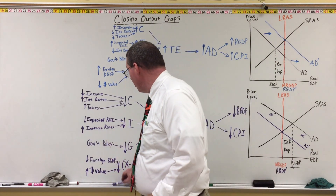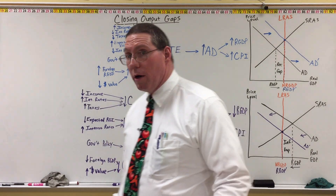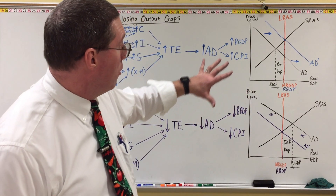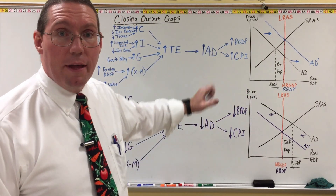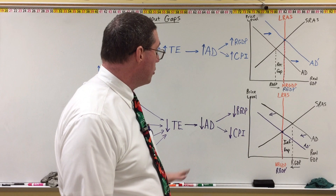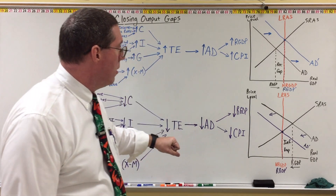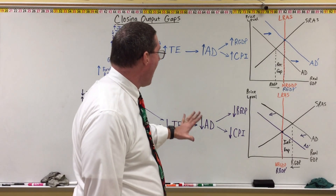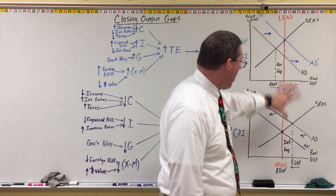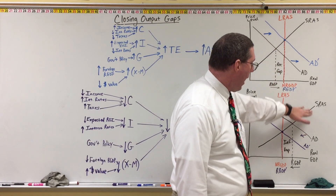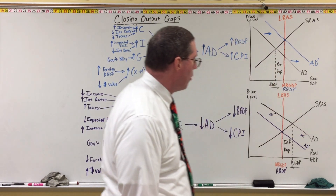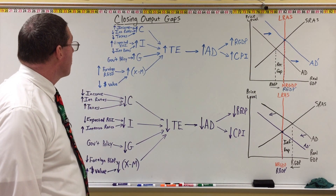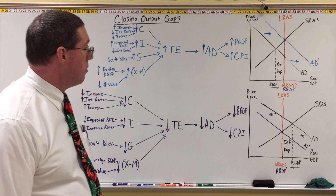That's it for Unit 2. It's important that you understand the aggregate market, the curves in the aggregate market and how they interact, output gaps, long-run equilibrium, and how we can close these output gaps by shifting the aggregate demand curve and the short-run aggregate supply curve. Send me an email if you have any questions, and I'll see you in the next lesson.